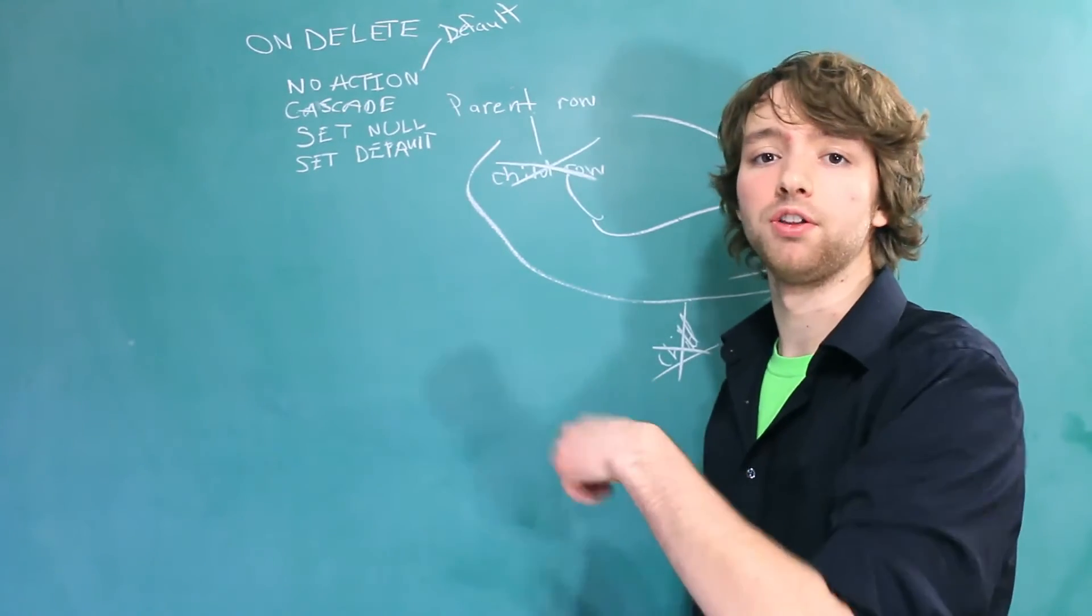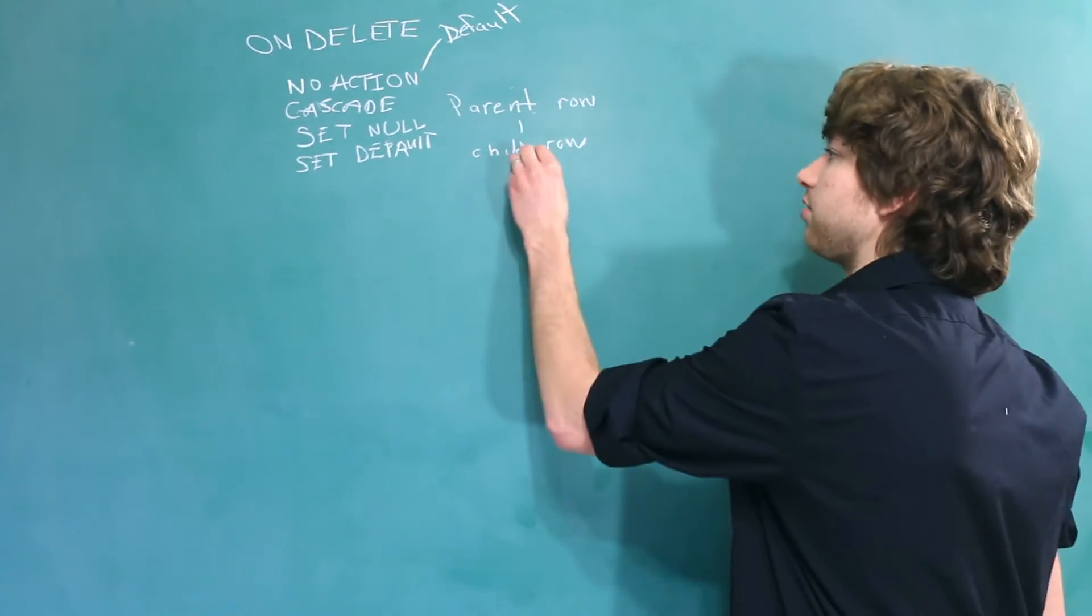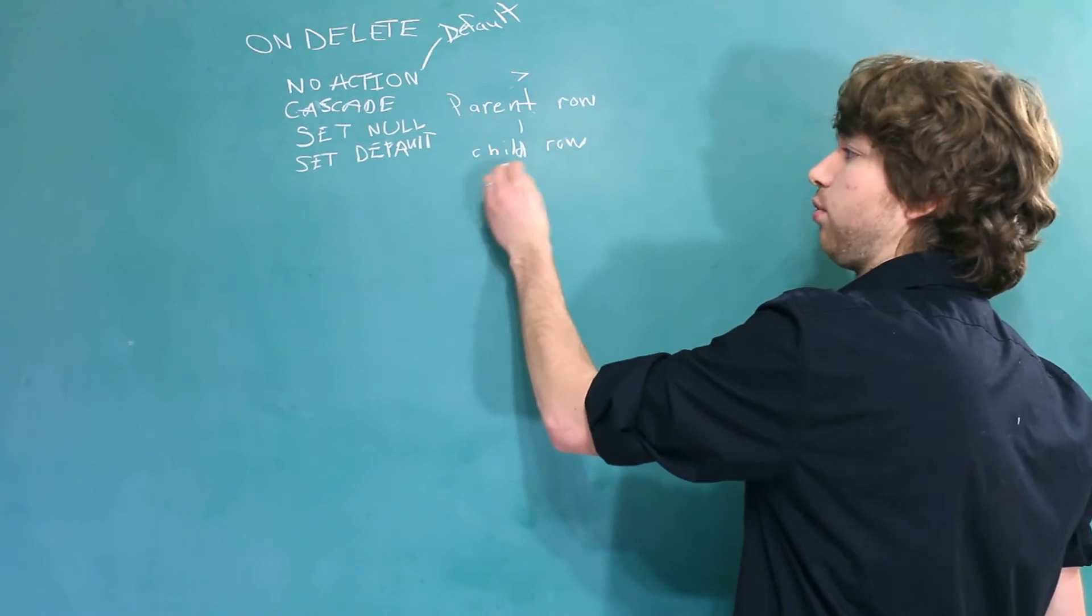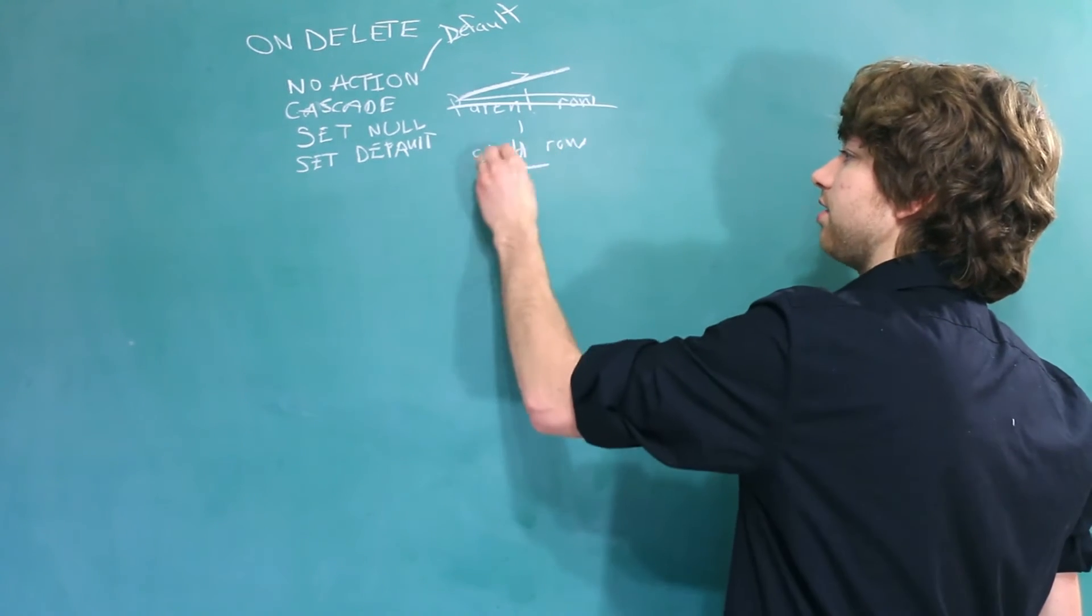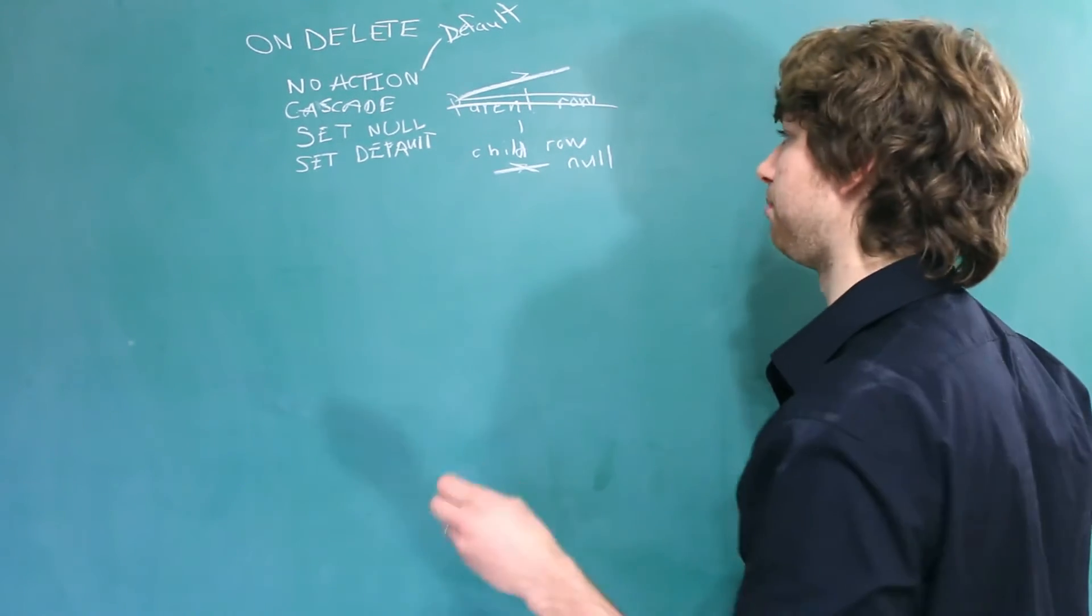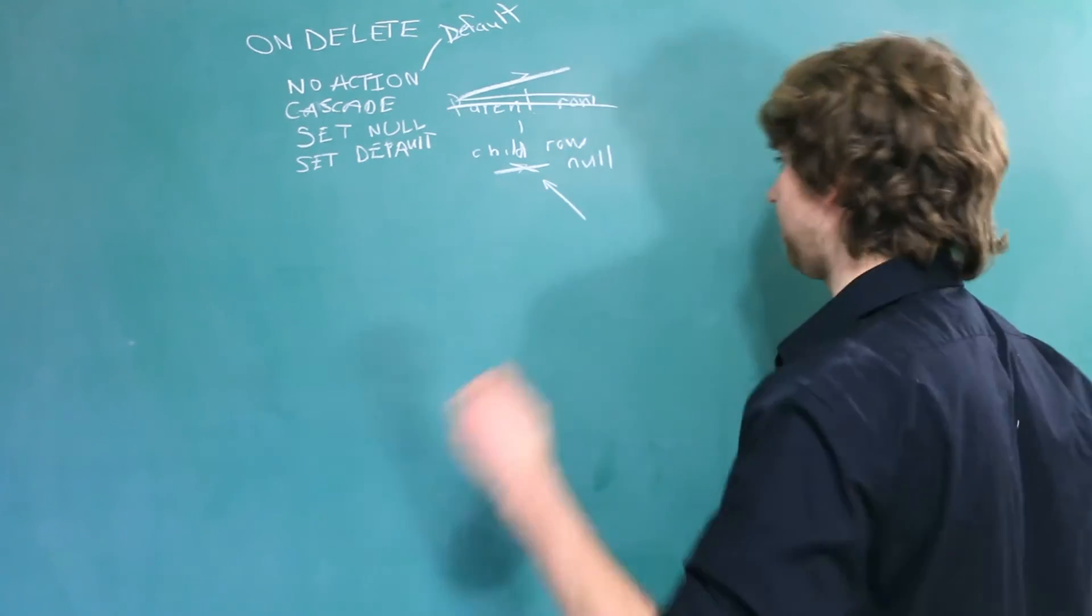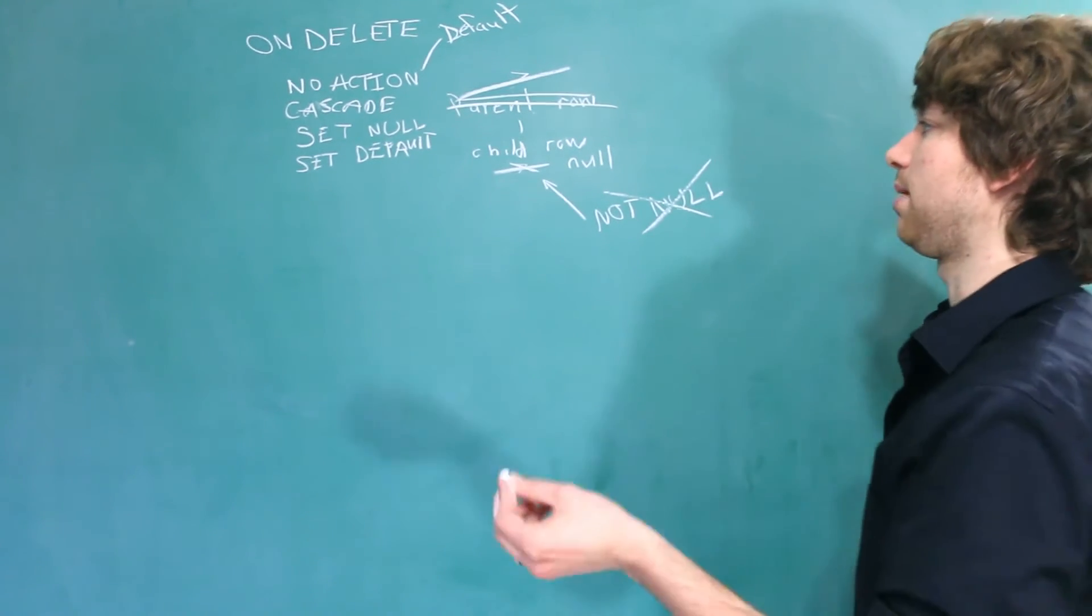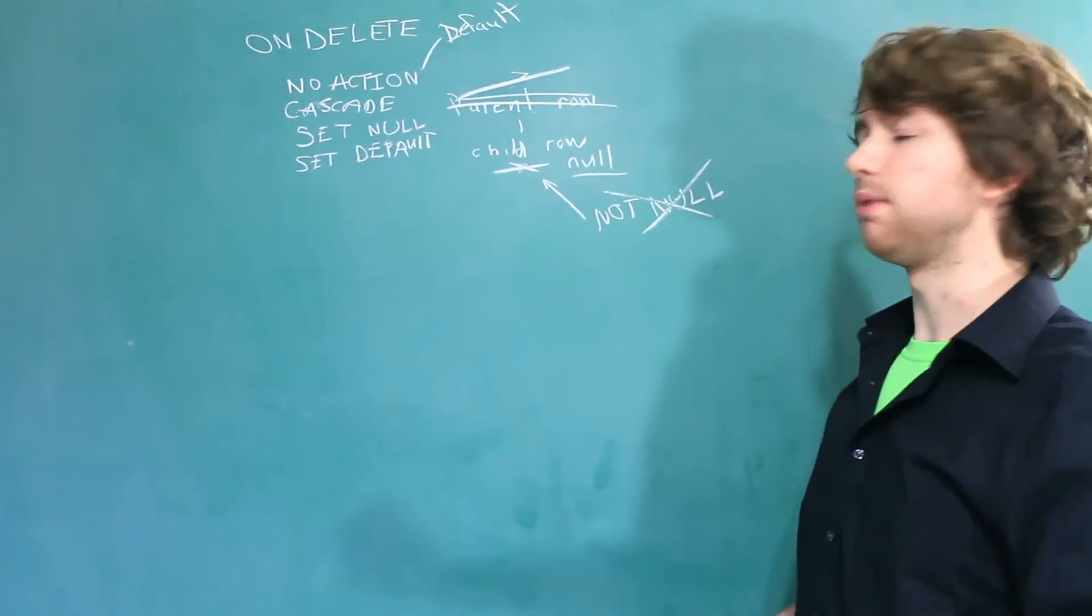So CASCADE will delete all of the children referencing that parent. SET NULL, that one is going to set the reference in the child to null. So if this parent has an ID of 7, and in the foreign key column we have that reference, and then we delete this parent, this 7 is going to be replaced with null. That one's fairly simple, but you're going to have to keep in mind that this column that's storing this value has to be able to be set to null. Therefore it cannot be labeled NOT NULL.